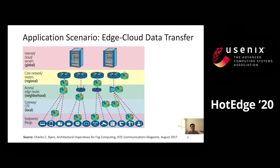In an edge-cloud system architecture, big data are collected at end points and analyzed on edge nodes. Currently, there is an emerging trend that data are moved from edge nodes to cloud servers for deep analysis. The data movement crosses wide-area networks, which have low bandwidth. Edge-cloud data management is facing big challenges. First, the edge-to-cloud data transfer time is long, which delays scientists from gaining insights due to the wide-area network bottleneck. Second, the cloud storage costs of explosive IoT big data will be huge.